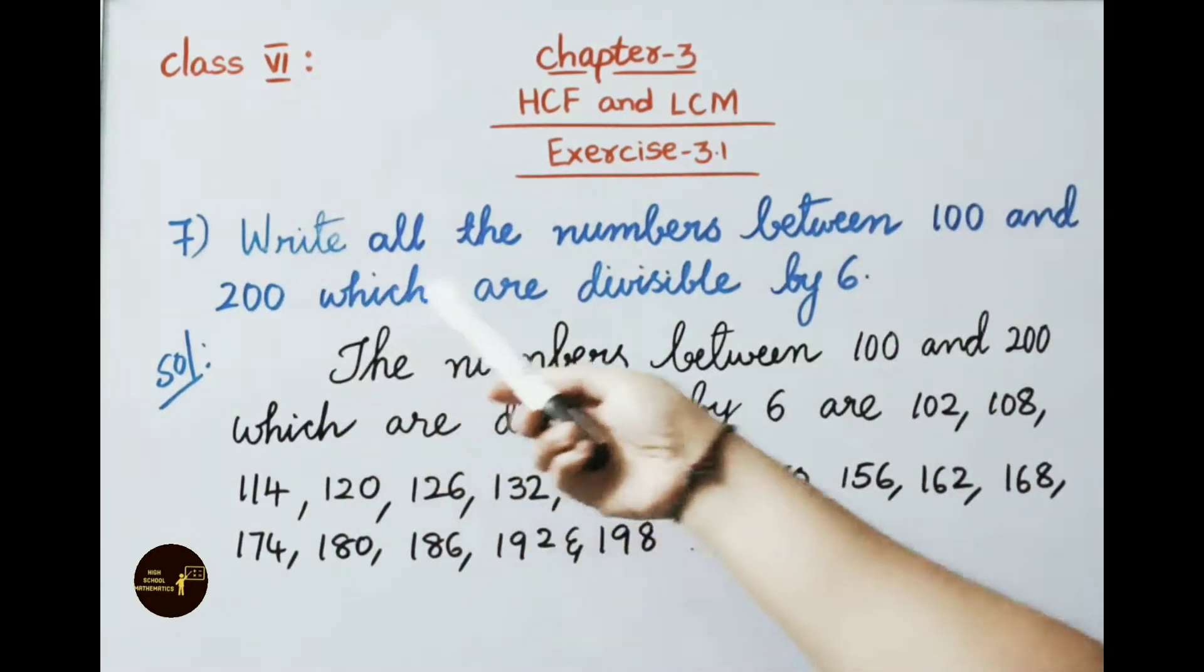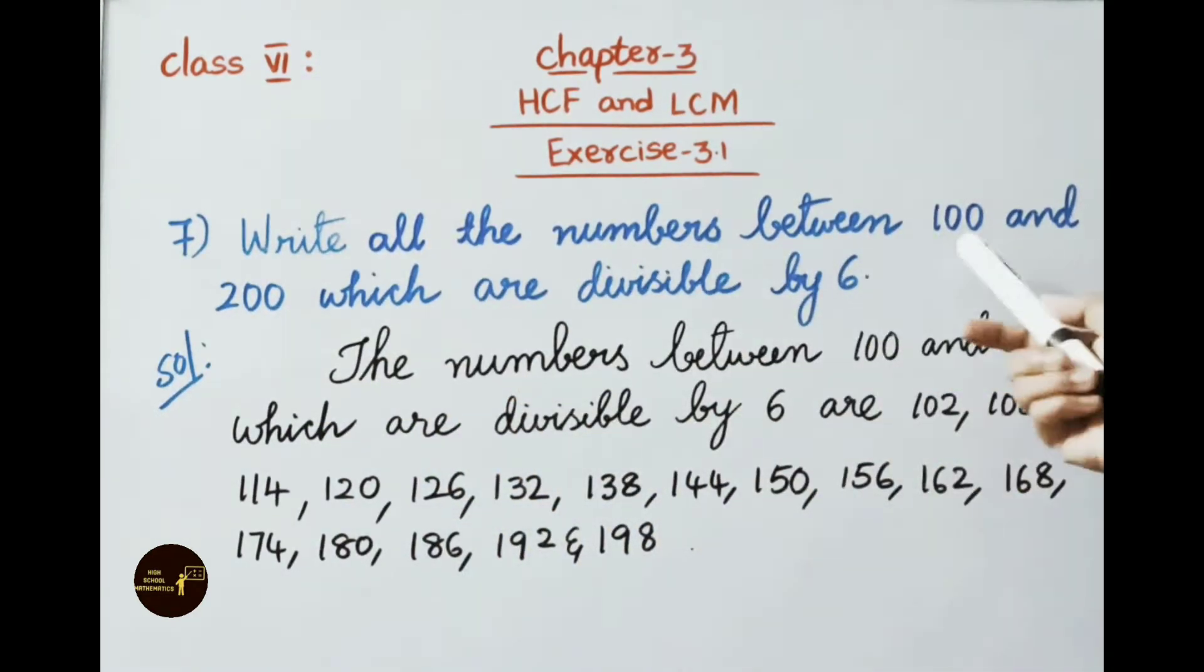See the 7th question. Write all the numbers between 100 and 200 which are divisible by 6. Let us see the solution. The numbers between 100 and 200 which are divisible by 6 are 102, 108, 114, 120, 126, 132, 138, 144, 150, 156, 162, 168, 174, 180, 186, 192, and 198.